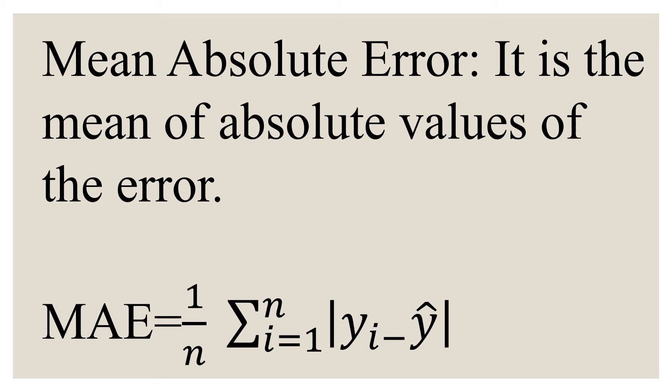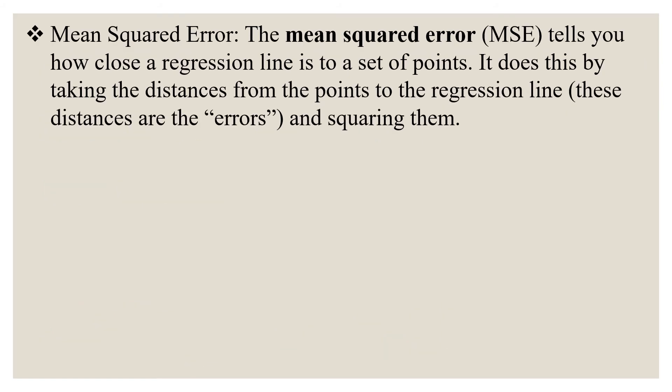Let us look at the next evaluation metric. The next evaluation metric is nothing but the mean squared error. The mean squared error tells us how close a regression line is to a set of points. It does this by taking the distances from the points to the regression line. These distances are the errors and squaring them.